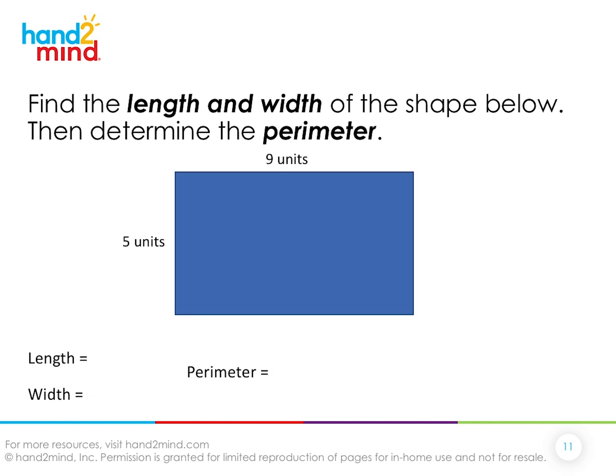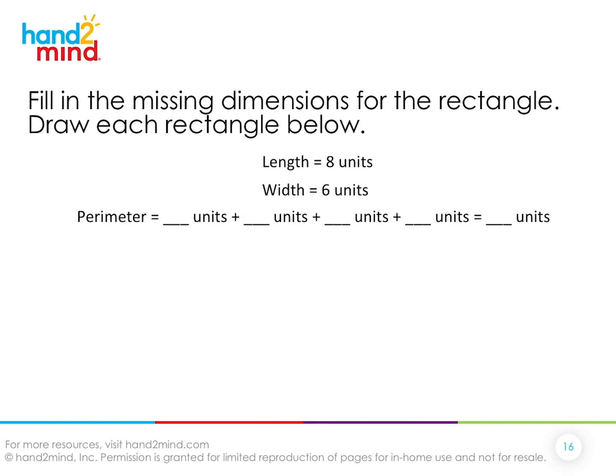Now we have another one. This time I didn't give you the grid, just the rectangle and the units. But nothing changes, the concepts are all the same. The length is up top, 9 units. The width is on the side, 5 units. To get the perimeter, you add up 9 units here plus 9 units here, 5 units here plus 5 units here, and you get 28 units total.